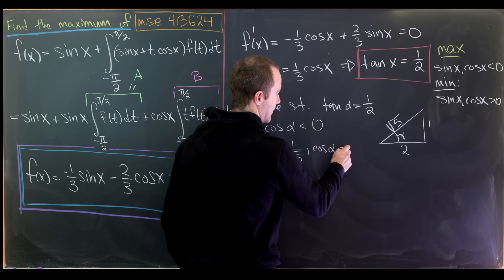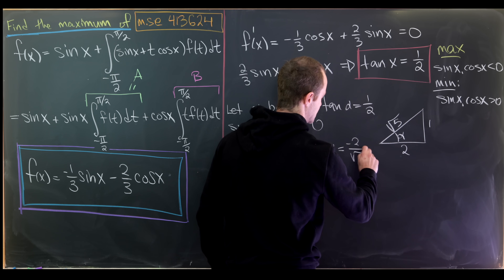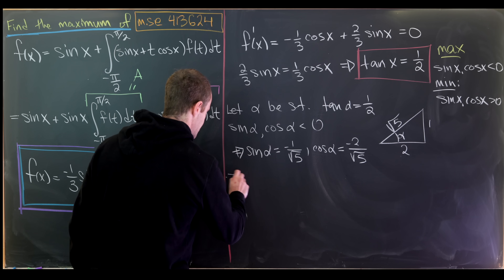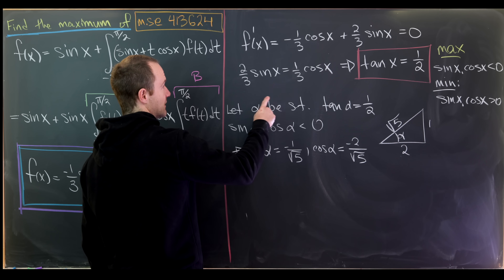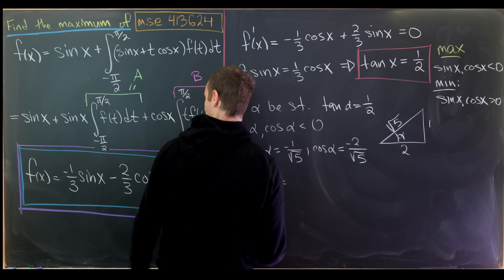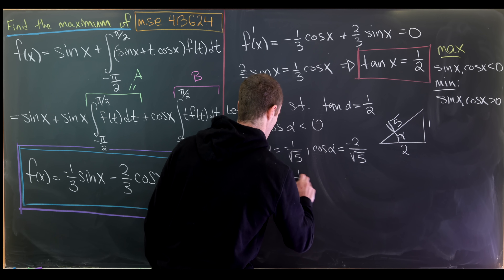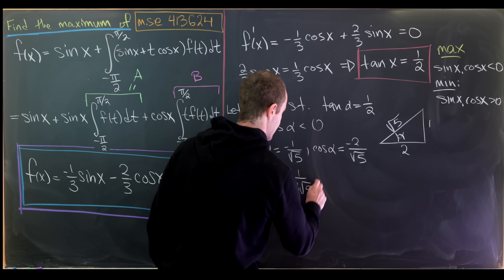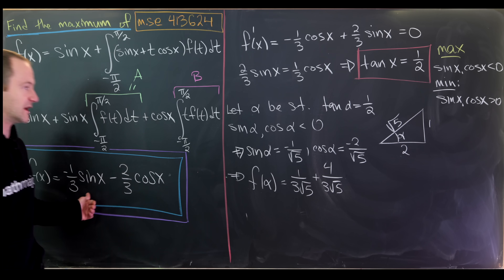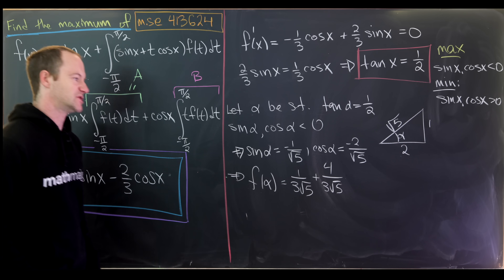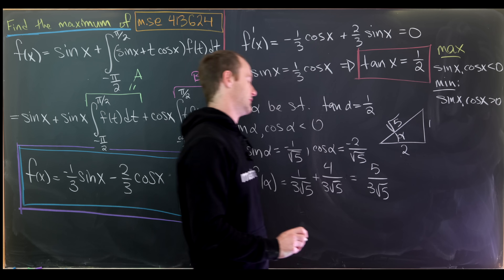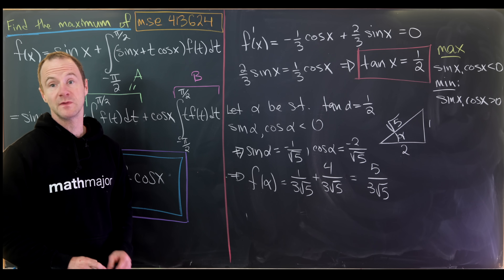Since this value of alpha gives a maximum for our function, f of alpha is the maximum. Computing: negative 1 third times negative 1 over root 5, plus negative 2 thirds times negative 2 over root 5, gives 1 over 3 root 5 plus 4 over 3 root 5, which equals 5 over 3 root 5. So the maximum value is 5 over 3 times the square root of 5.